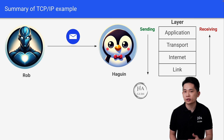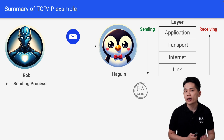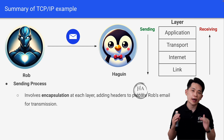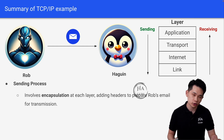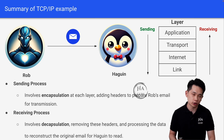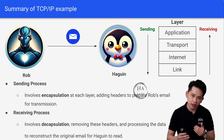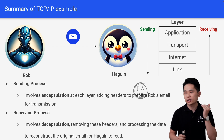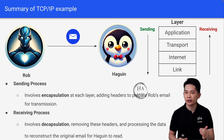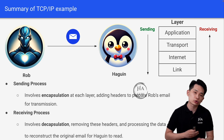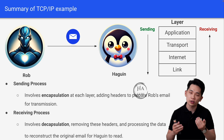Let's look at a quick summary of the TCP/IP example. At the sending process, it involves encapsulation at each layer, adding headers to prepare Rob's email for transmission. Whereas at the receiving process, it involves decapsulation — removing headers and processing the data to reconstruct the original email for Hagrin to read. In a nutshell, at the sending side we keep adding headers to the original message at each layer, whereas at the receiving side we keep stripping the headers to retrieve the original email.